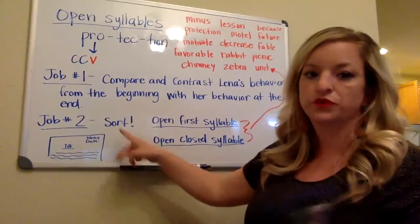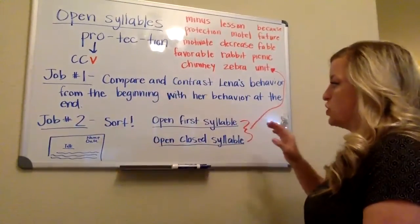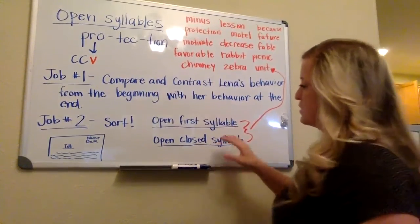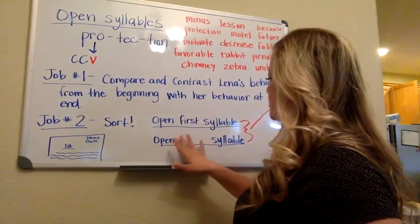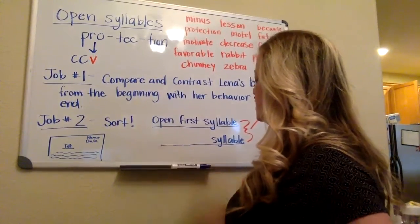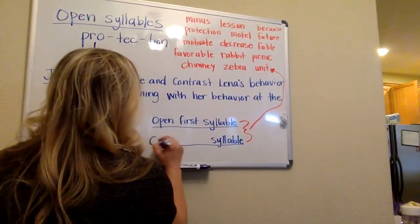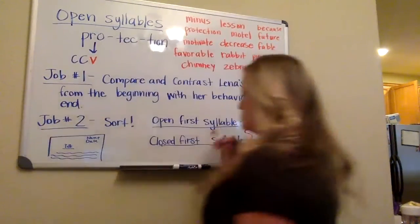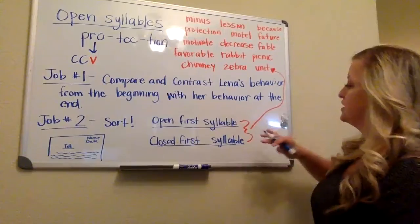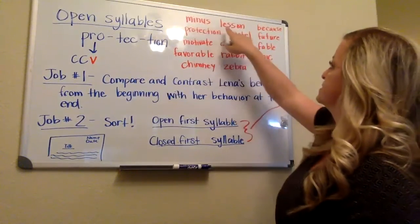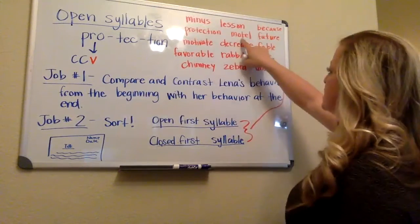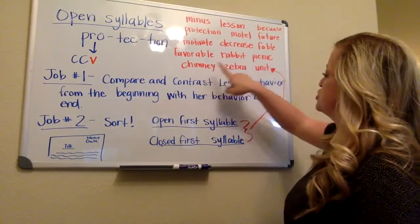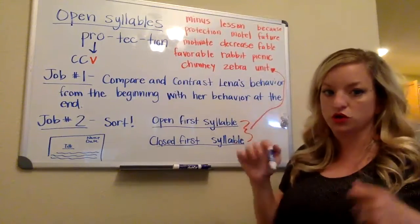Your second job with your words is to sort them. The two categories are open first syllable and closed first syllable. You need to sort these words: lesson, protection, motel, future, motivate, decrease, fable, favorable, rabbit, picnic, chimney, zebra, and unit. Sort those into open first syllable or closed first syllable.